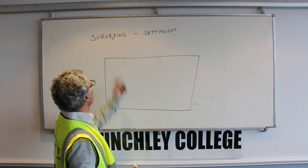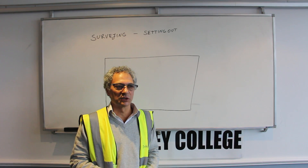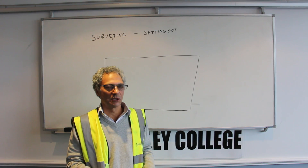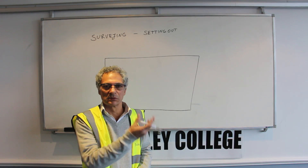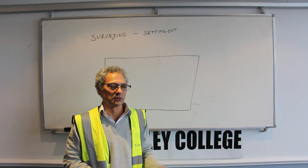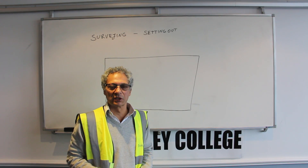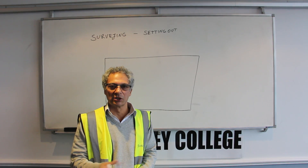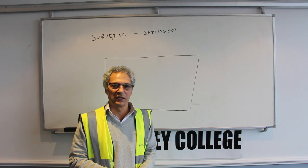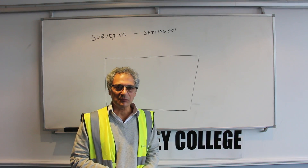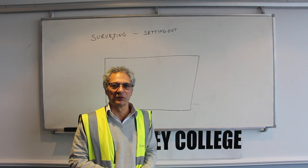The act of surveying is to find out the position of various items on site. For example, you want to survey a road, a junction, a roundabout, and you want to pick up the position of the curbs, the gullies, any manholes, the lampposts, the trees — any features that the surveyor or the architect wants to know.